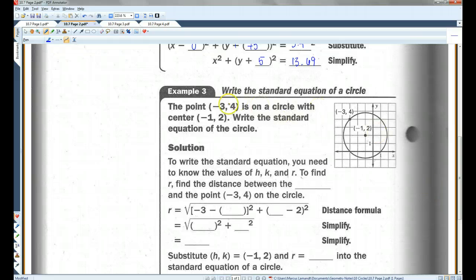All right, let's try a harder one. The point (-3, 4) is on a circle with center (-1, 2). Write the standard equation of the circle. So we have the center, h, k. What we don't have is the radius. And it's not a perfect number, we can't just count. So in order to find the radius, in order to find the distance between these two points, we're going to have to use the distance formula.